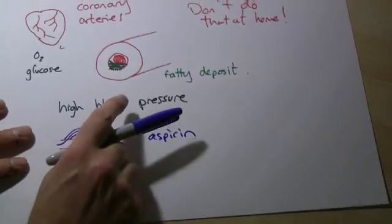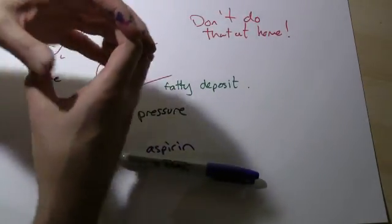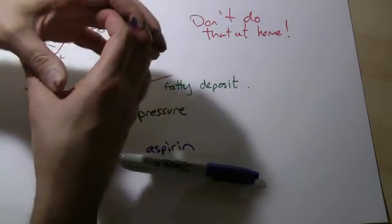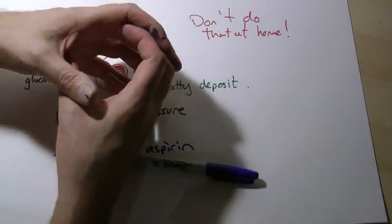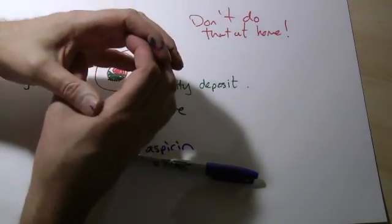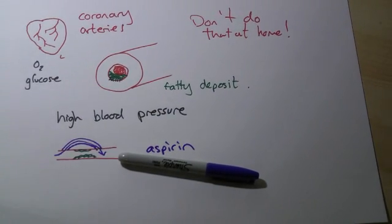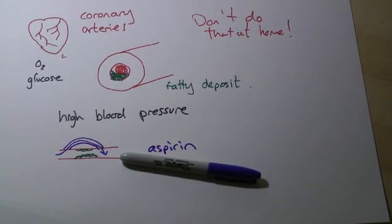As you get older, these blood vessels tend to get less stretchy anyways. The blood's normally pumping through. As you get older, it can't get any wider. Your arteries are just not as stretchy anymore, so they won't stretch as much, and that tends to increase the blood pressure as well. So that's why a lot of older people take aspirin.